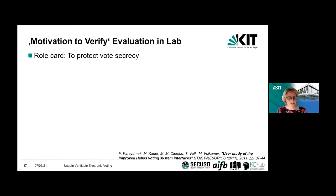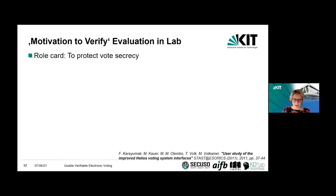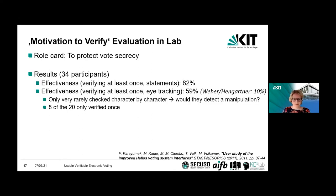Having explained this, you can already see that it's quite complicated, even though it's easier compared to the original one. We conducted a lab study to better understand whether people are motivated to verify. Typically in this context, you give people a roll card explaining what they should vote for. In this study, we found that 82% are motivated because they at least think they verified. But using eye tracking, we know that only 59% actually verified — which is still higher than the 10% from the original interface.